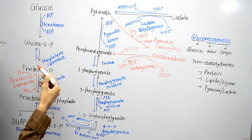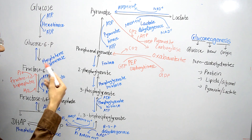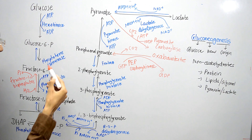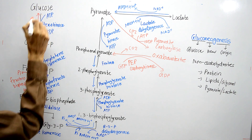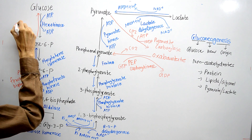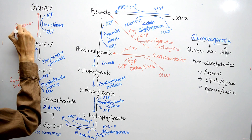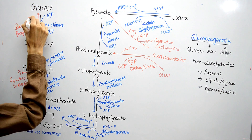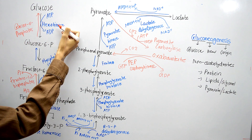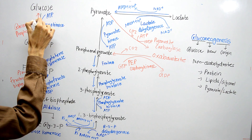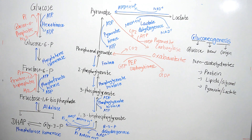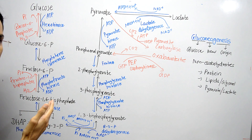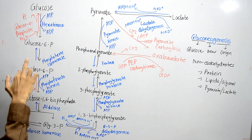Fructose-6-phosphate can produce glucose-6-phosphate, catalyzed by phosphoglucose isomerase — this reaction is reversible. Then, since the reaction catalyzed by hexokinase uses ATP, a different enzyme is needed: glucose-6-phosphatase. In the glucose-6-phosphatase reaction, inorganic phosphate is produced and H₂O is used. So these two steps involve irreversible reactions in glycolysis that require unique enzymes in gluconeogenesis.